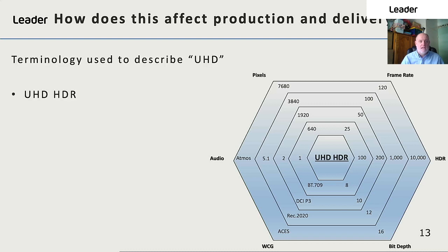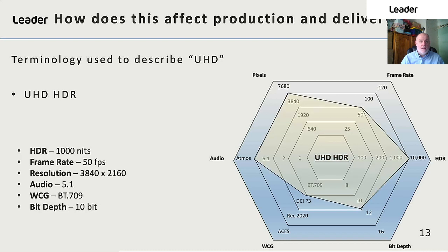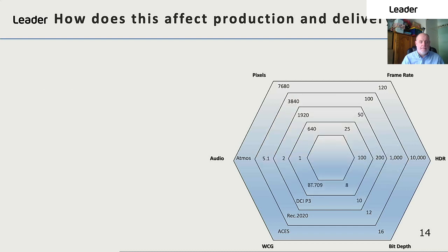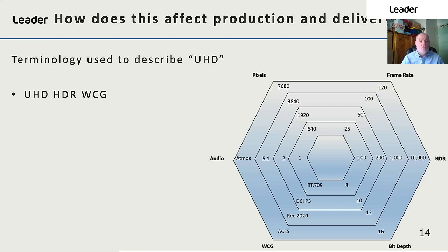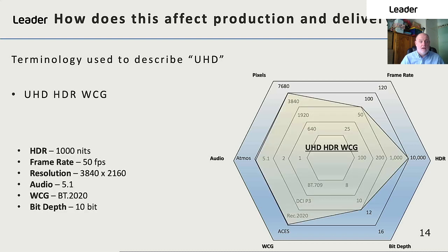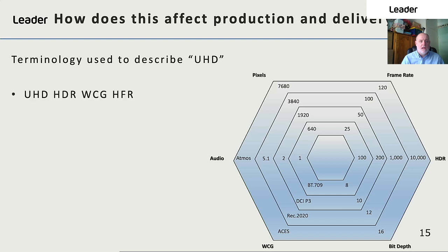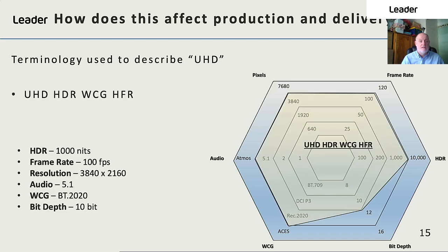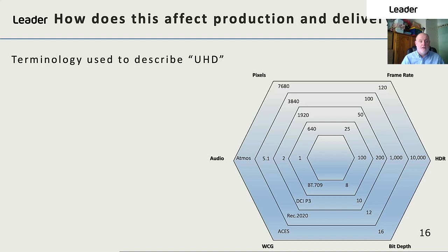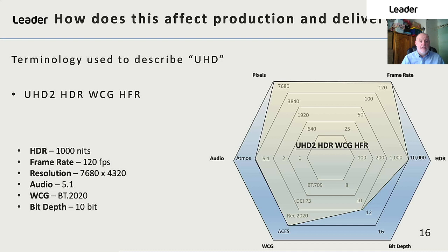However, there is then UHD HDR, where we now see the HDR component going up to 1000 nits. The next is UHD HDR wide colour gamut, where we see the colour gamut now going up to BT.2020. Finally, we can have UHD HDR wide colour gamut high frame rates, where the frame rate goes up to 100 frames per second. We also have UHD 2 HDR wide colour gamut high frame rate, being used by NHK in Japan for their 8K service, where the resolution goes up to 7680 by 4320.